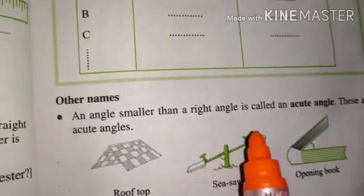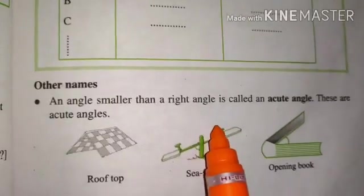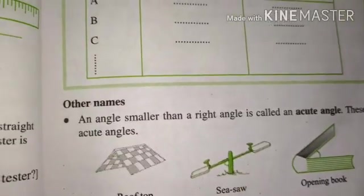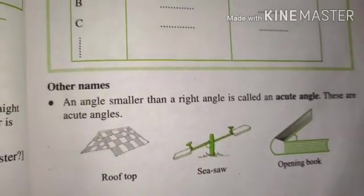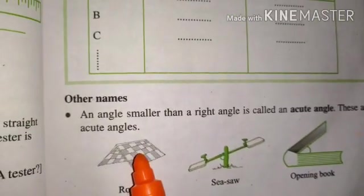Keh raha hai, an angle smaller than right angle. Jab bhi 90 degree se kam, zero se greater, aur 90 se kam angle bane ga, woh humesha acute angle hoga. So, these are called acute angles.